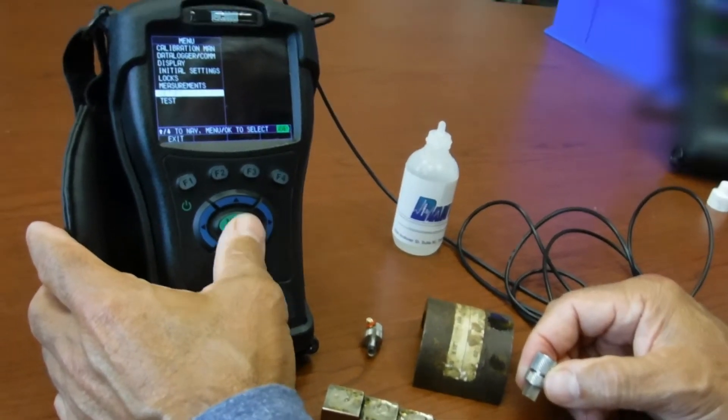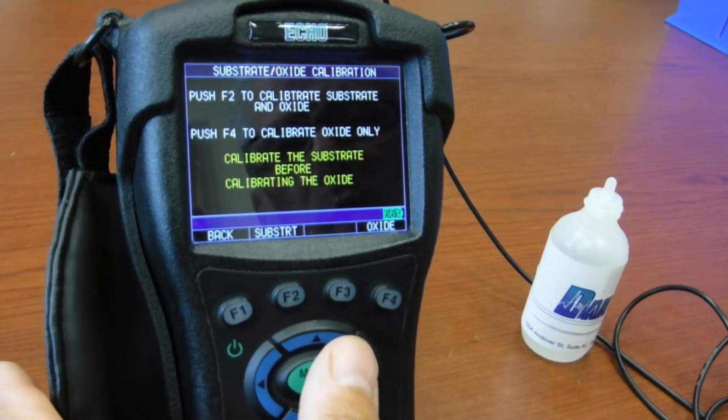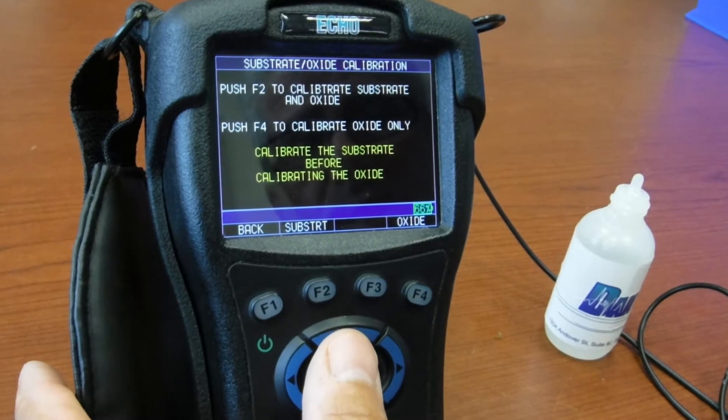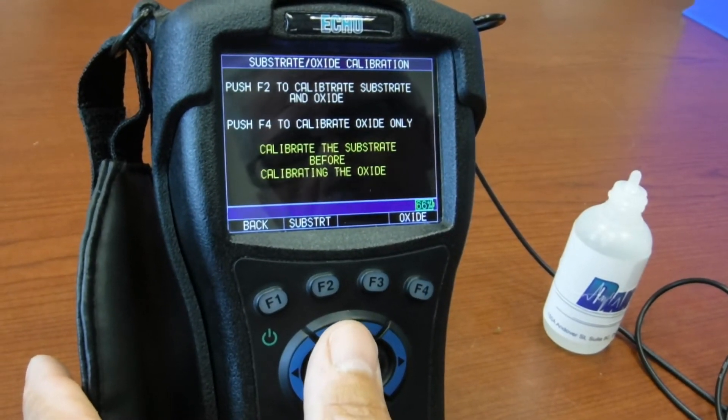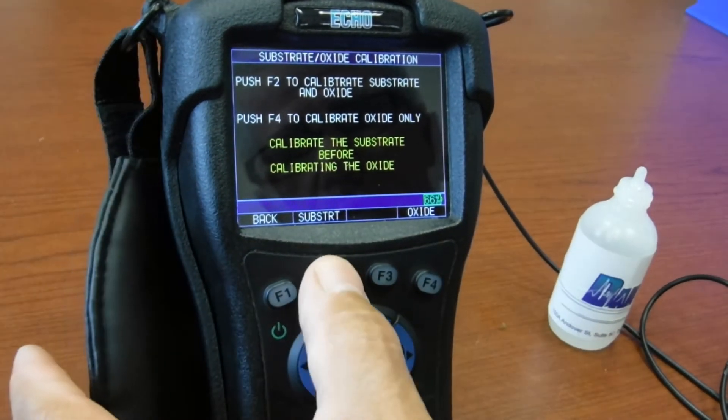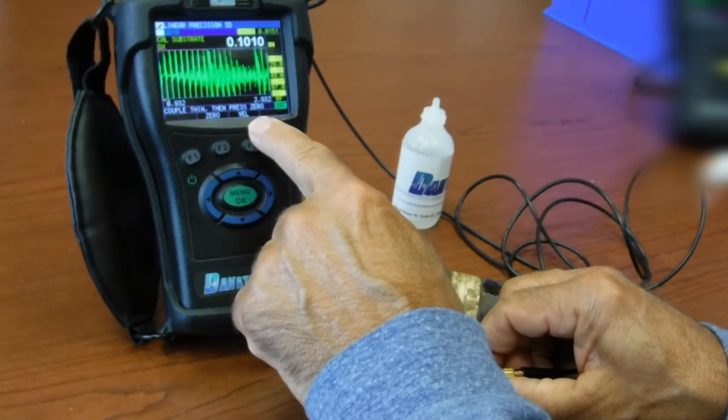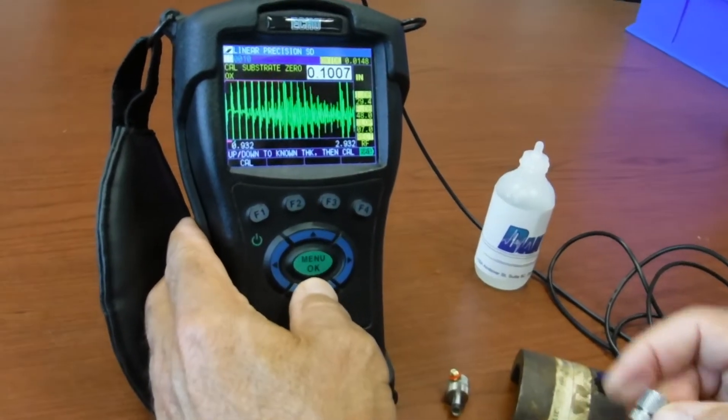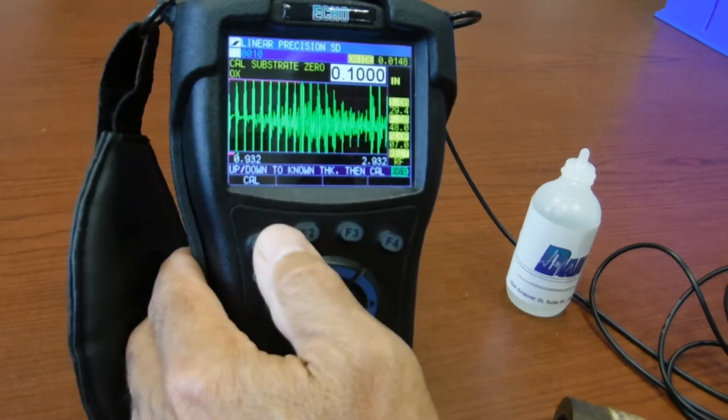I press menu OK. I scroll up to calibration manual. Note that you can only operate the calibration in manual mode. The automatic calibration feature does not work in the oxide scale mode. I press F2 for substrate as the prompt says. Coupled to one hundred thousandths. Press zero which is above F2. Scroll down to the known thickness and then press CAL as the prompt says.